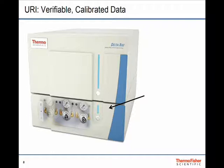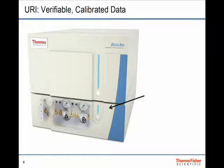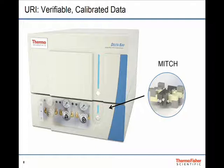I've showed you how a mid-infrared platform is pretty simple and you get very good performance out of it, good precision. Now what does the URI, the Universal Reference Interface, add? It essentially provides you with very viable and calibrated data. At the core of the URI is what we call the MITCH, a mixing and switching device. It's a micromachined precision engineered piece of equipment that allows you to mix the different gases.